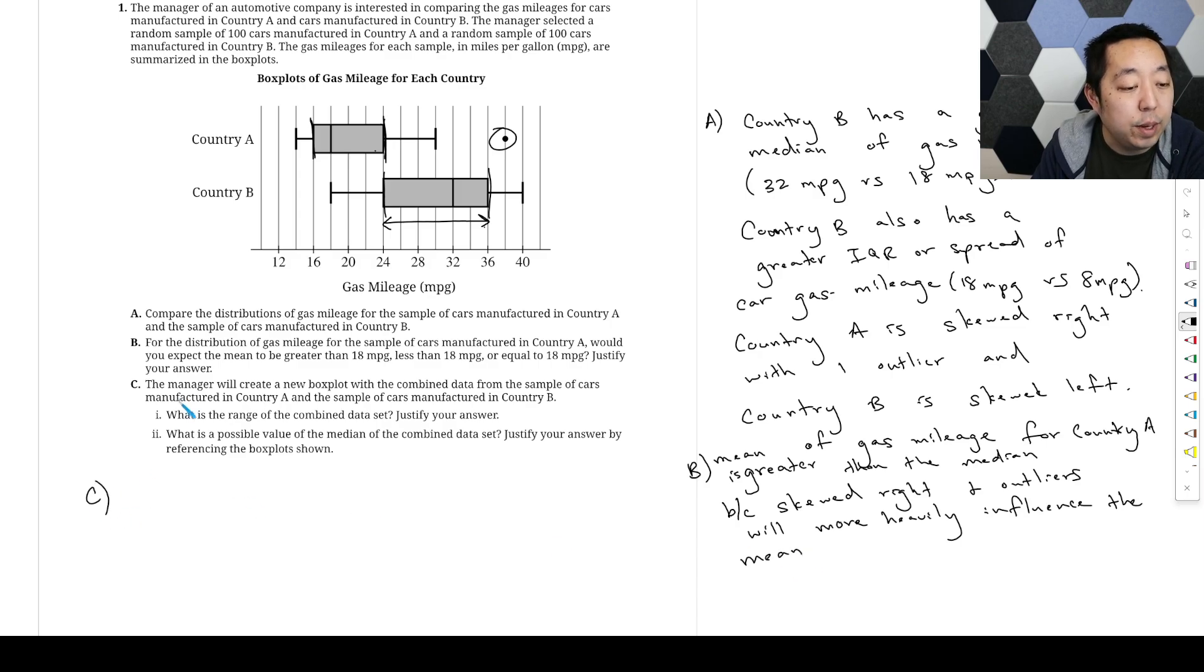And part C, the manager will create a new box plot with the combined data from sample cars manufactured in country A and the sample cars manufactured in country B. What is the range of the combined data set? Justify your answer.